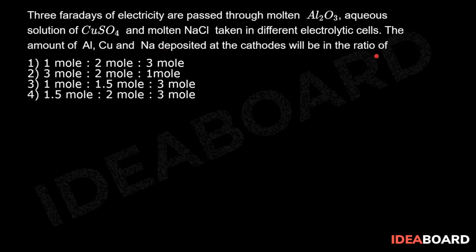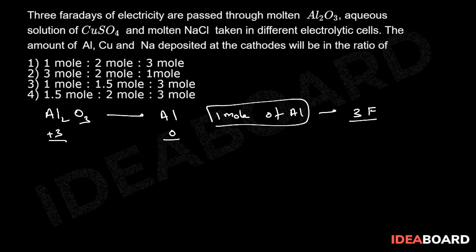For Al2O3, if deposited in the form of aluminium, it goes from plus three to zero. This means one mole of aluminium will require three faradays. Since the question gives three faradays, that means one mole of aluminium will be deposited.